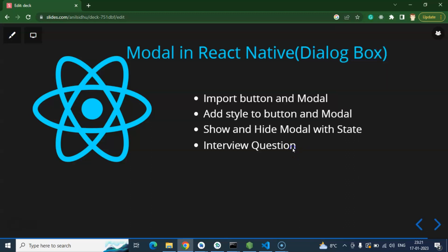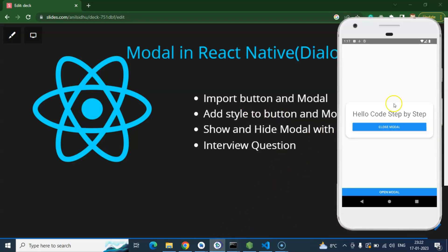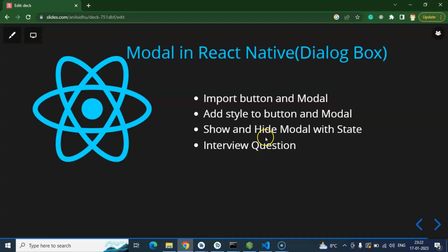So what we need for that: first we have to import Button and Modal, then add some style to the button so we can fix it at the bottom, provide some shadow and style to the modal, add StyleSheet, use state to show and hide the modal, and at the end we will cover some important interview questions. So now we can start with the code.